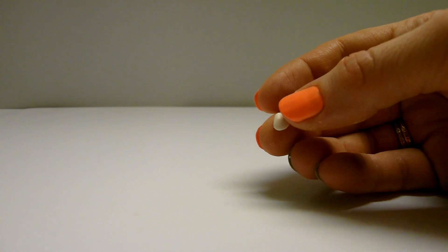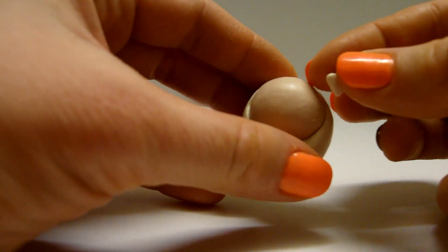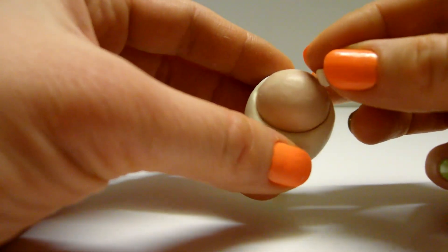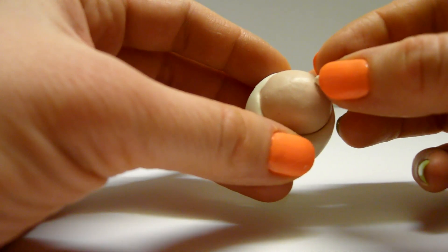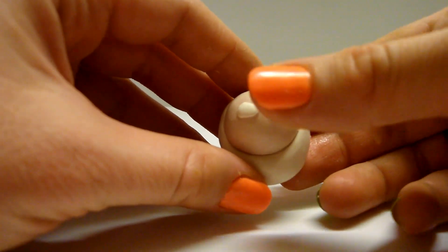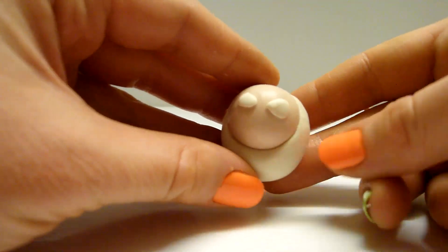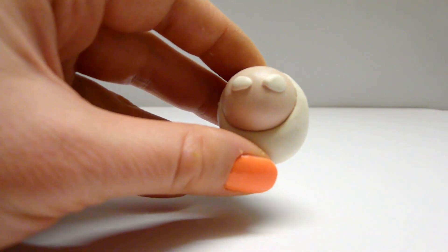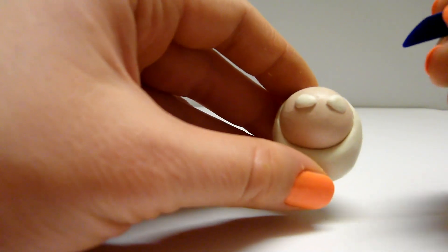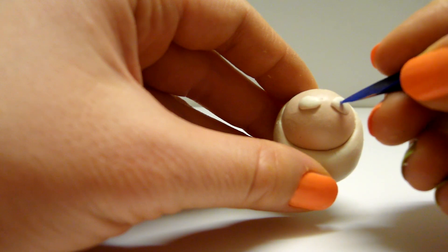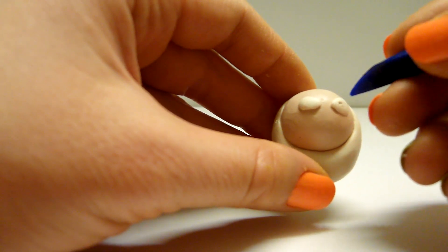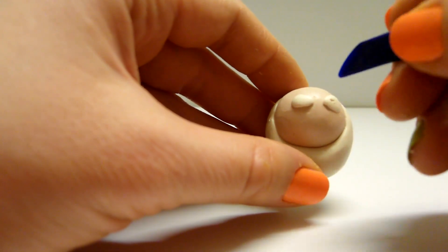Make eyes of small parts of white clay. Insert the pupils.